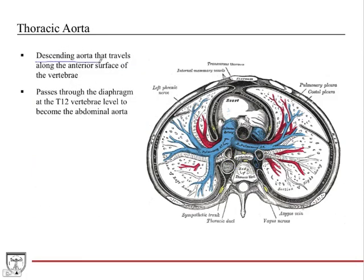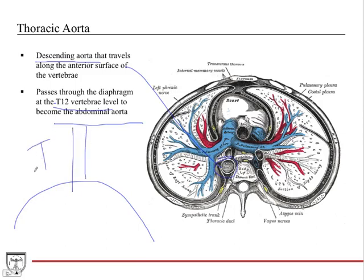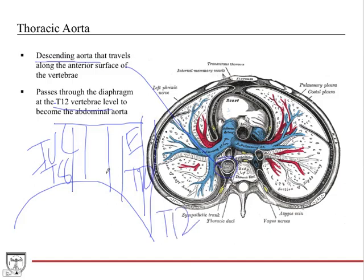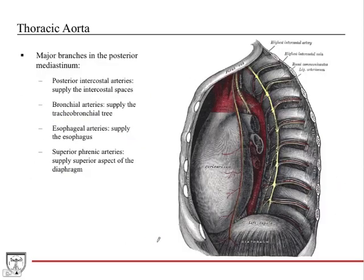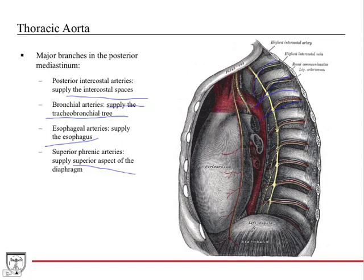The thoracic aorta is the descending portion traveling along the anterior-lateral surface of the vertebrae in the thorax, continuing through the diaphragm at T12 to become the abdominal aorta. A useful mnemonic for diaphragm openings: IVC at T8, esophagus at T10, aorta at T12 — going down the slope by twos. Major branches in the posterior mediastinum include the posterior intercostal arteries supplying intercostal spaces, bronchial arteries supplying the tracheobronchial tree and lungs, esophageal arteries, and superior phrenic arteries supplying the superior diaphragm.